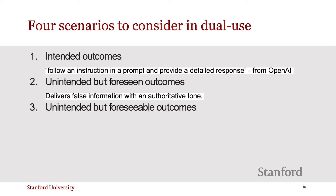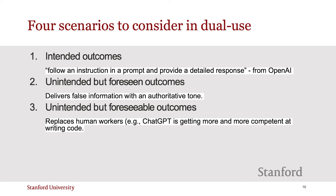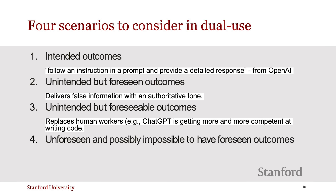The third scenario is unintended but foreseeable outcomes. This is a superset of the outcomes captured by the second scenario. It includes all outcomes that could have been reasonably foreseen by the designers, even if the designers did not actually foresee them. For example, ChatGPT has a huge potential for displacing human workers, including those that perform jobs that require specialized skill sets. OpenAI is doing work to address this issue, but all this work is retroactive.